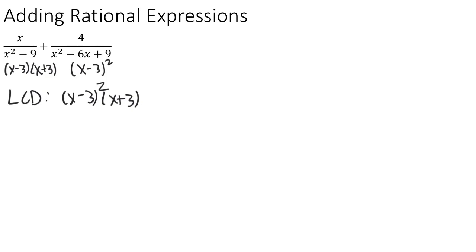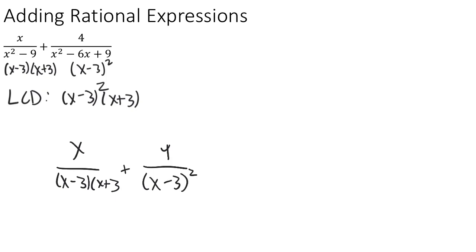Now that we've identified the common denominator, the next task is to get that on the bottom of both fractions. We rewrite our expressions with factored denominators. For the first fraction, the denominator is (x minus 3)(x plus 3) — we're missing one (x minus 3) to match the LCD, so we insert one and multiply the top by (x minus 3) as well. For the second fraction, we already have (x minus 3) squared, but we're missing an (x plus 3), so we insert that and multiply the top accordingly.